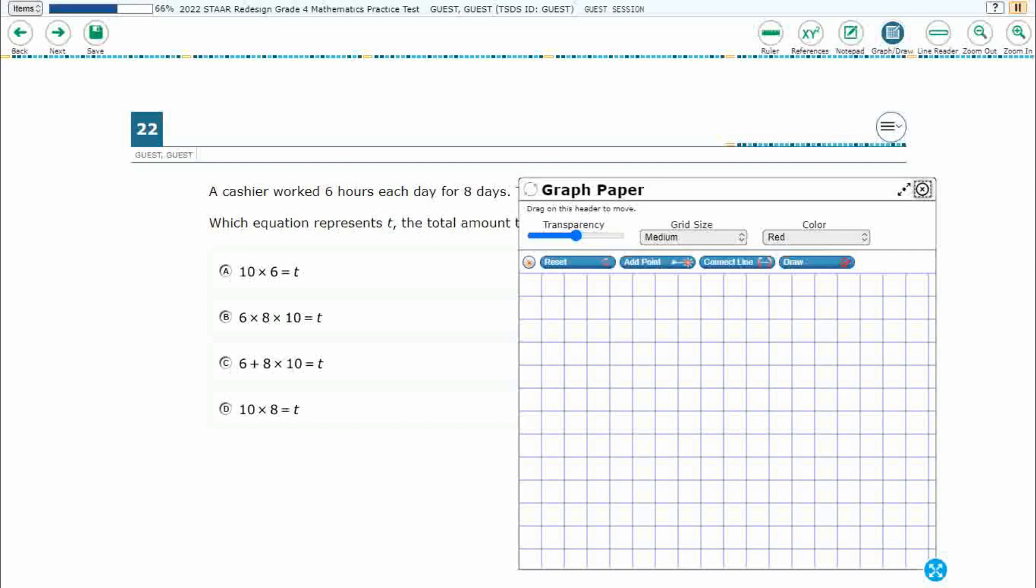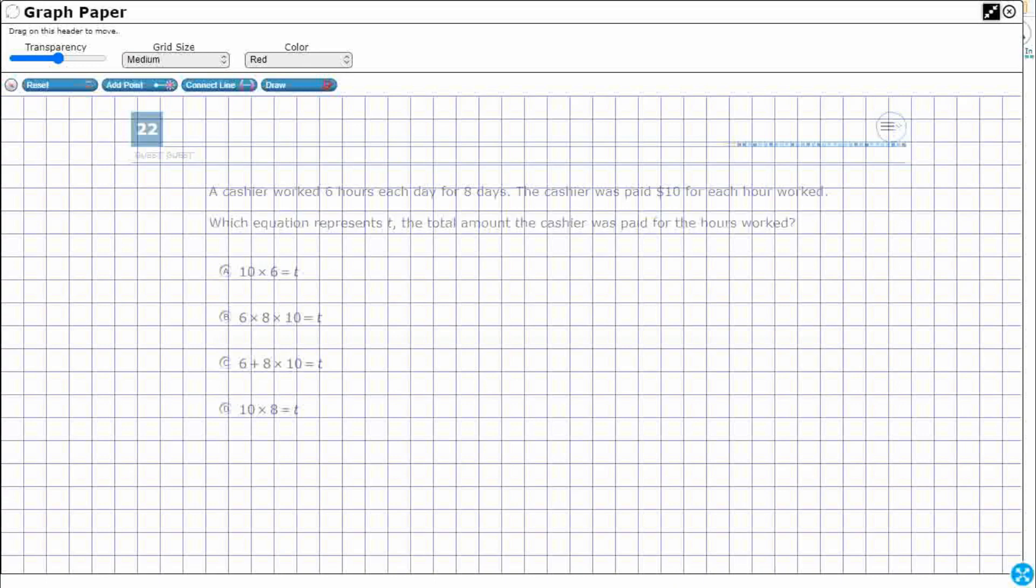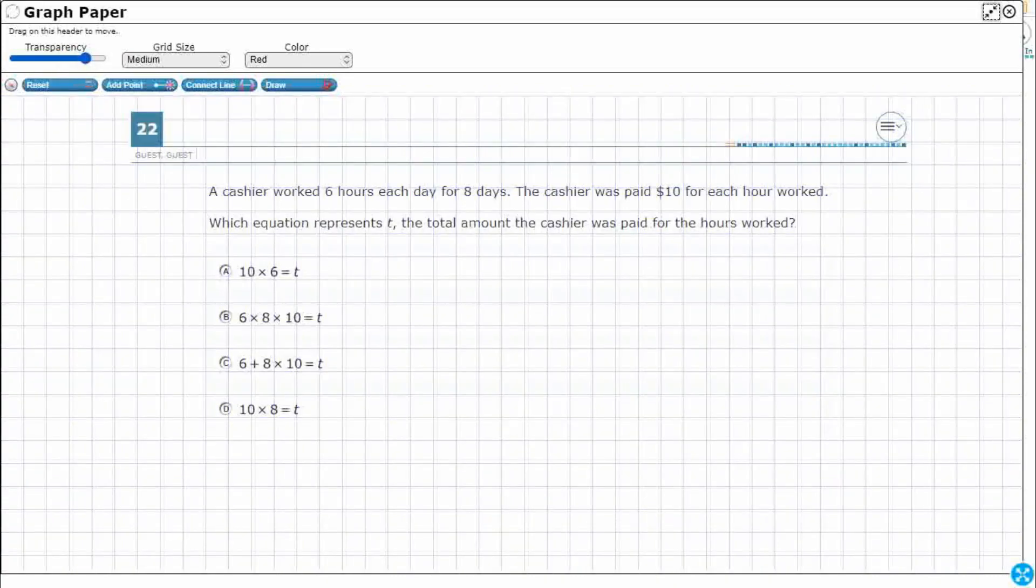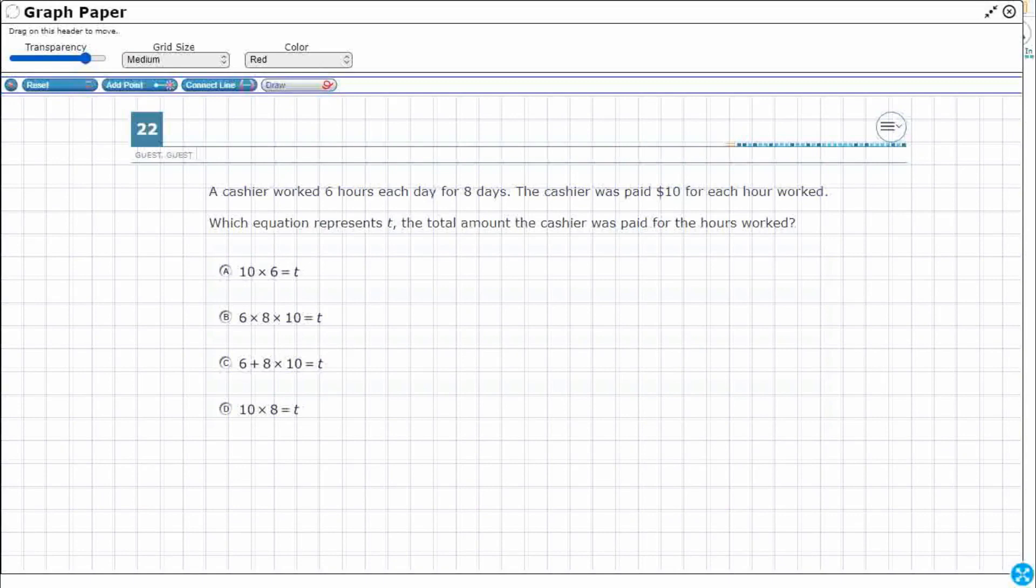So we're going to open up the graph draw feature and expand it out. So really we're just looking for an equation. Let's use draw here and we just need to figure out we get three different numbers. What do we do with these numbers? Do we need all of these numbers? Because as you can tell, a and d don't have all three numbers. So we either need two or three of the numbers and then are we adding, we're multiplying, we're doing both.